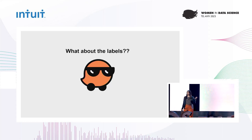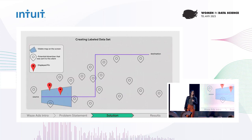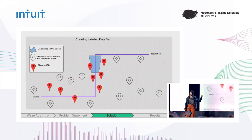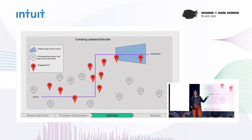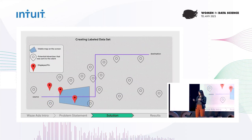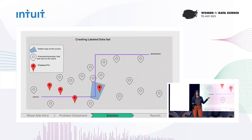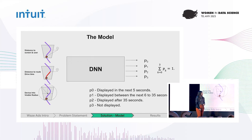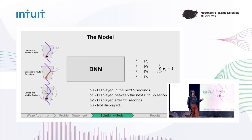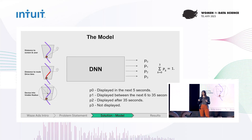What about the labels — how do we get those? For the 50 pins sent to the client every two minutes, each one that gets displayed is marked as positive, and if it wasn't displayed, we mark it as negative. That's how we get our labeled dataset. We chose to use a Deep Neural Network. The main reasons were that the dataset was very large, the connections between the features and the label were pretty complex, and mostly because it outperformed all the other methods we tried.